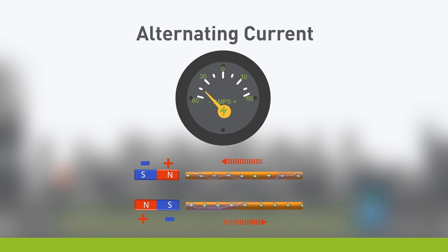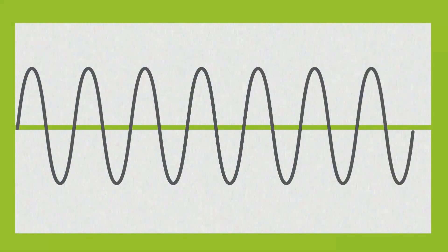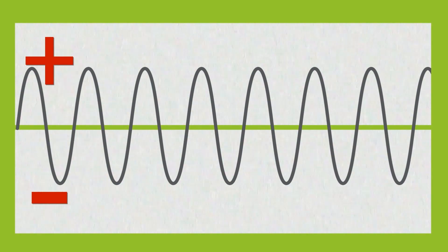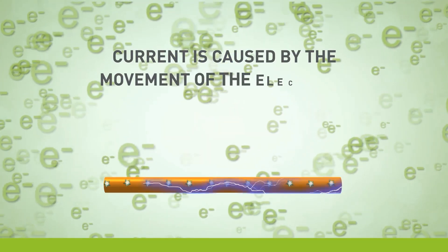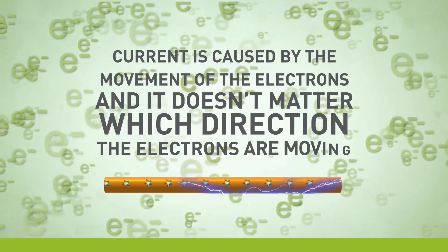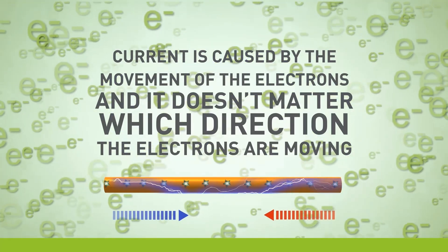An ammeter measures the amps or current in a line. Some will show positive and negative values and others won't. Another method of measuring current is to use a digital oscilloscope. Many charts will show positive and negative numbers to reflect the direction of the current. Remember, plus 2.3 amps provides the same current strength as minus 2.3 amps. Let me repeat this critical statement: Current is caused by the movement of the electrons and it doesn't matter which direction the electrons are moving.